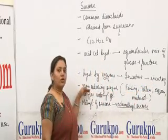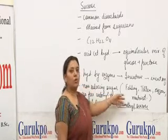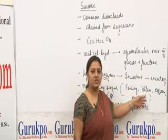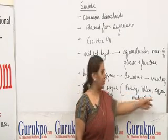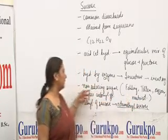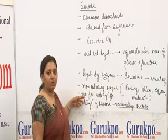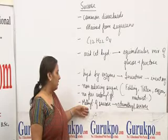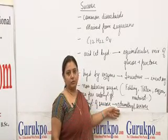Sucrose is a non-reducing sugar. We call it non-reducing because it does not give any test with Fehling's solution or Tollens' reagent, and no osazone formation takes place. There is no mutarotation either. No free carbonyl group is present. Methylation of sucrose gives octamethyl sucrose.